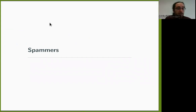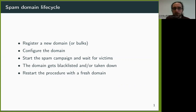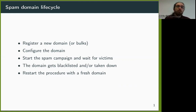Catching spammers is a matter of speed. Before the spamming campaign, they are hard to detect, and after the spamming campaign, blacklisting them will be of relative use. The vast majority of spam domains follow this life cycle: spammers register a new domain and configure it, then they start the spam campaign and wait for victims, then the spam activity is detected and the domain gets blacklisted or taken down. But spammers just register a new domain and start over.